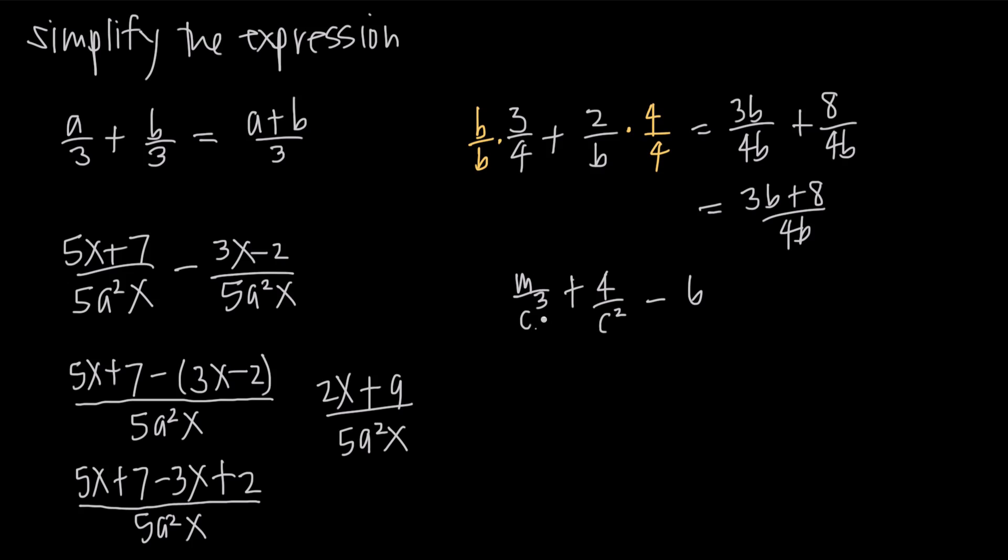Looking at the last problem, we have m/c³ plus 4/c² minus 6. The first thing we need to realize is that 6 is actually 6/1. Now we've got 3 fractions which we can deal with by finding a common denominator. Our denominators are c³, c², and 1. So what's the least common multiple of c³, c², and 1? It's going to be c³. We can multiply this second fraction by c/c because in the denominator that'll give us c² times c which is c³. Here we'll multiply by c³/c³ because 1 times c³ will give us c³. So now we'll have a denominator of c³ for all three fractions. Writing this back out, we get m/c³ plus 4c/c³ minus 6c³/c³. Now we can combine the fractions into one.